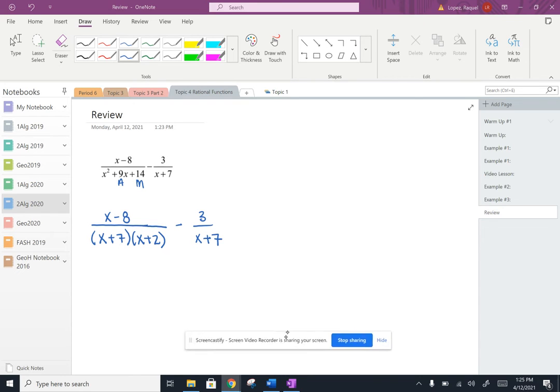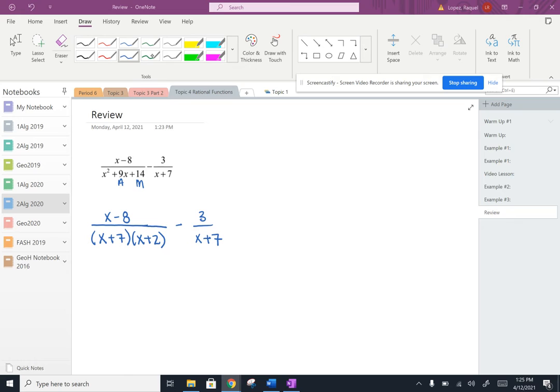Now that everything is factored, I can figure out what my least common denominator is. So I know my least common denominator has to have an x plus 7, and the least common denominator also has to have an x plus 2. So the first fraction has both. It's already got the least common denominator in there.